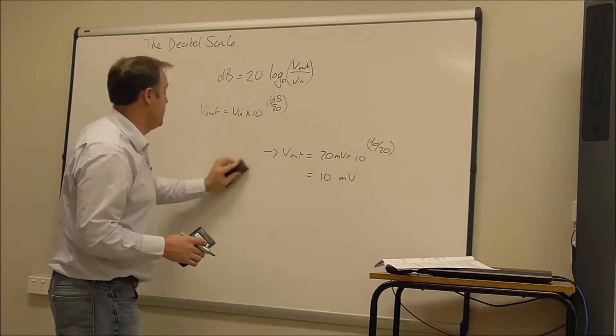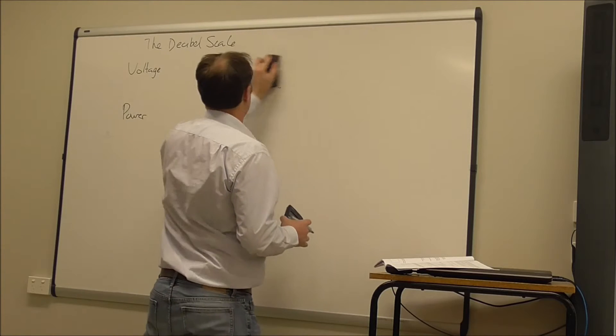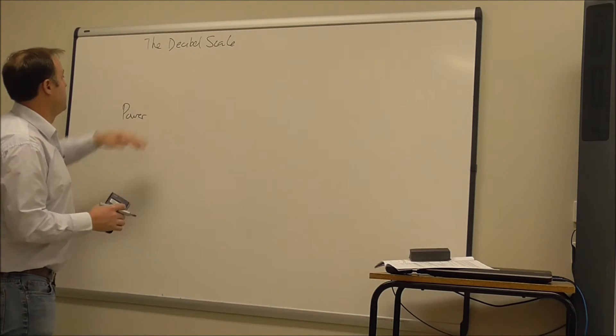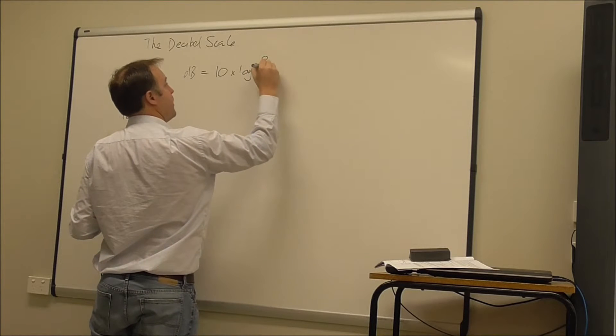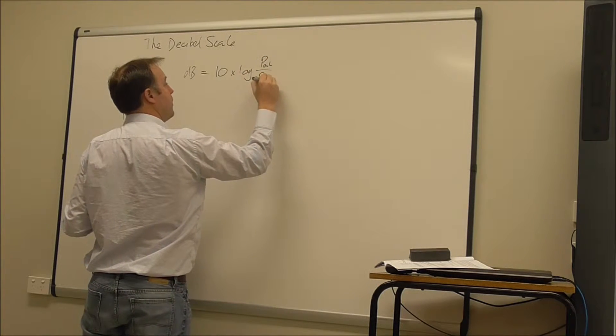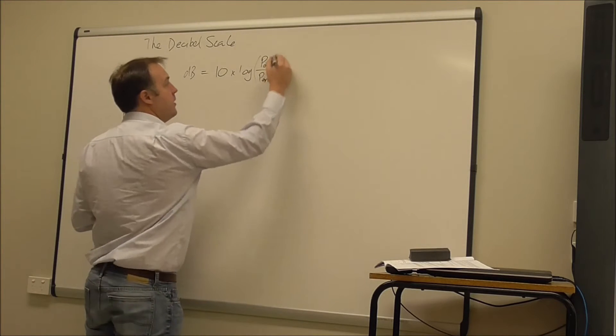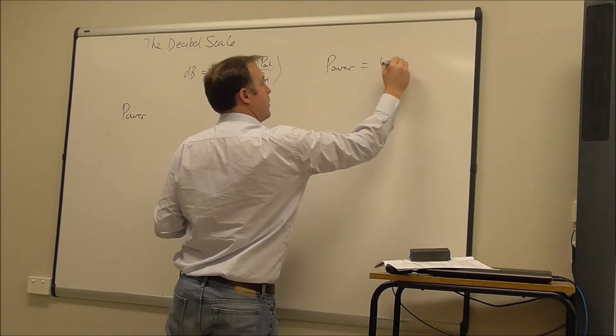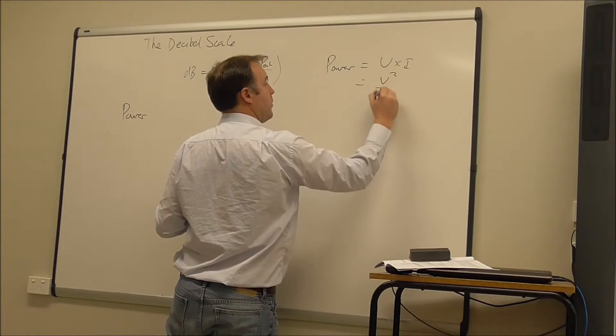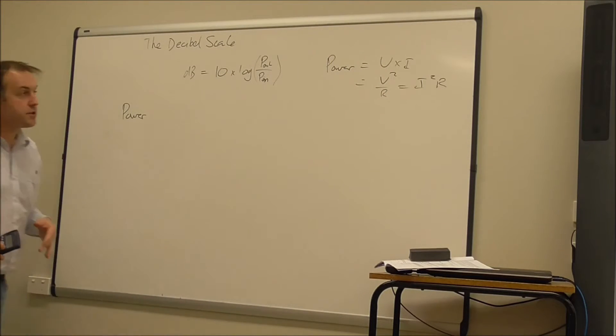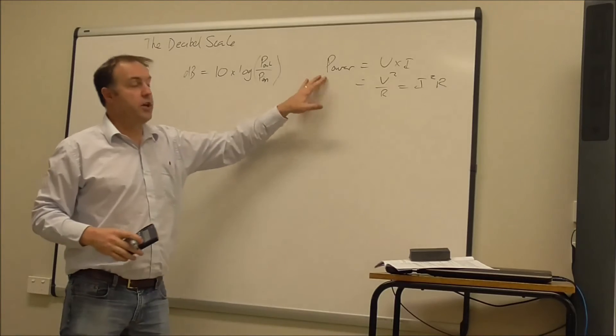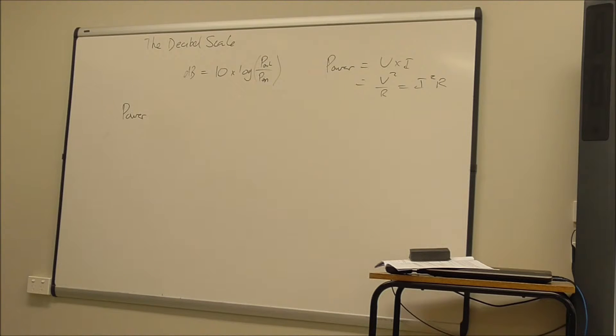Now for power it's slightly different. It's very similar but it's slightly different. So the power dB is 10 times log of the output power over the input power. Now keeping in mind that the definition of power here, it's the voltage times the current or the voltage squared divided by the resistance or the I squared R, current squared times the resistance. So power is really in joules per second. So don't get confused with it being a voltage or a current or something like that. It's actually the voltage times the current.